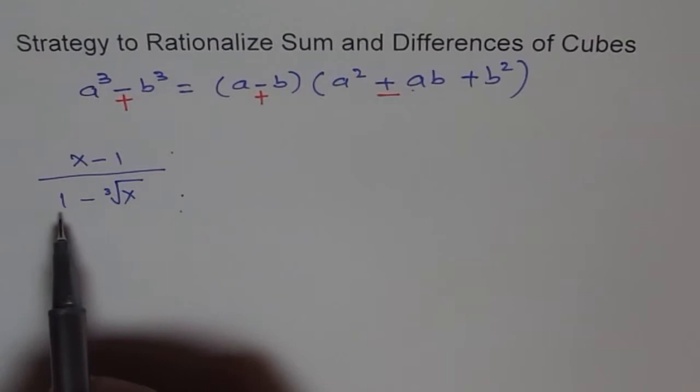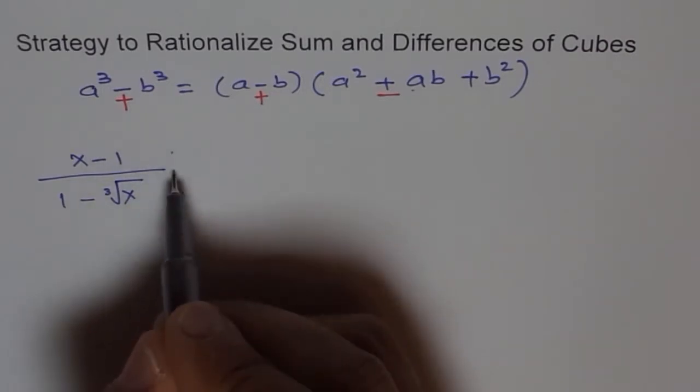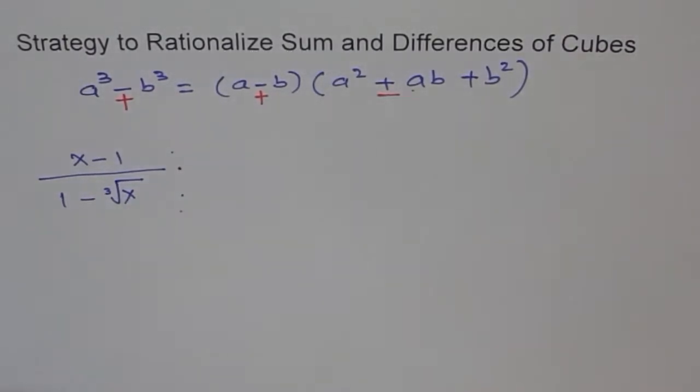Now what is a here? a is 1 and what is b? b is cube root of x. Do you see that? So what should we multiply and divide by?